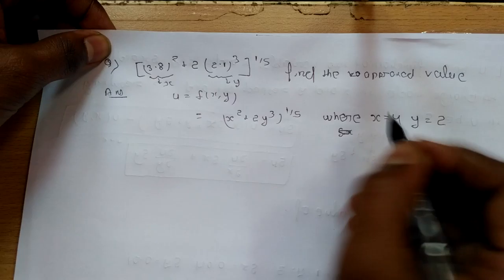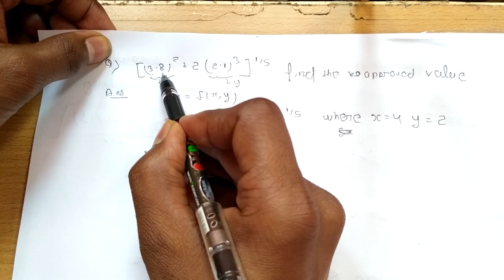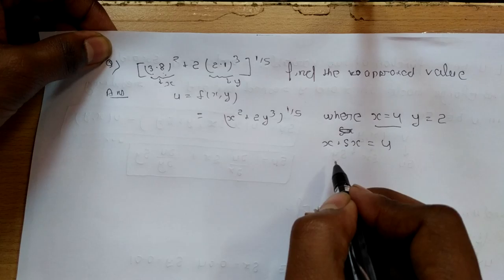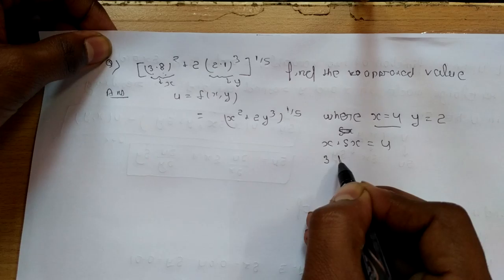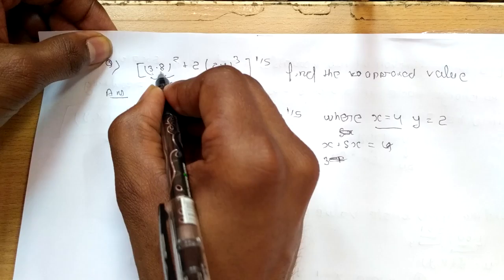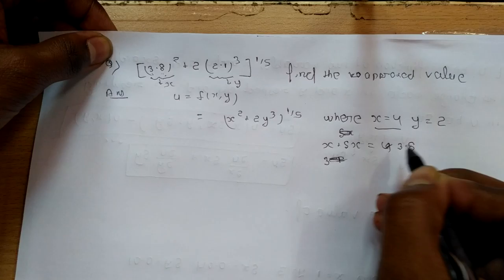हमने इस पूरे पार्ट को 4 consider किया — इसमें x पार्ट होता है और change in x पार्ट। तो हम इसको लिख सकते हैं: x + Δx = 3.8, और हमारे पास x = 4 है। x + Δx = 3.8.